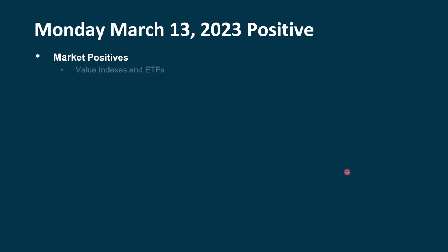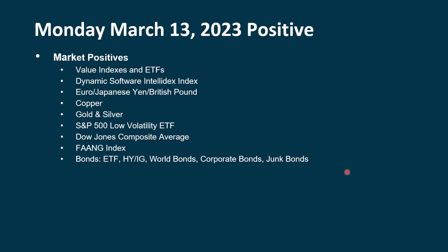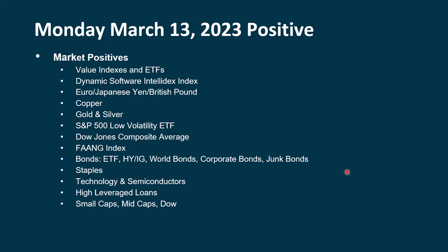So what is positive right now? There are some changes. The value indexes and ETFs remain positive. The dynamic software index — that's a new addition. The euro, the Japanese yen, and the British pound when compared to the dollar. Copper, gold, and silver. Low volatility stocks. The Dow Jones composite average. The FANG index is another new addition. Looking at a multitude of different bonds — the bond ETF, high yield bonds, investment grade bonds, world bonds, corporate bonds, and junk bonds are all positive. Staples continue to be positive. Tech — a new addition — and semiconductors. High leverage loans, small caps, mid caps, and the Dow, even though we're seeing some recent weakness. The NYSE composite and Wilshire also have some recent weakness. All stocks, emerging markets, and then the Bitcoin index — a new addition.